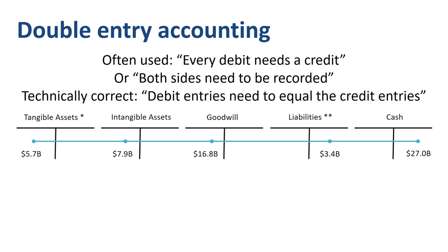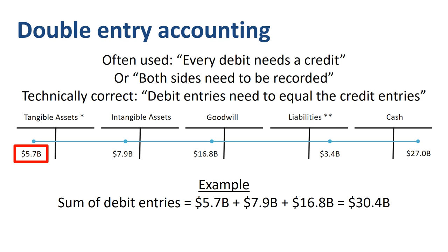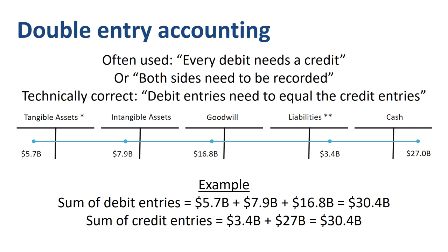Here's a summary example of a more complex journal entry recording the large acquisition of a company. There are three debits and two credits in this journal entry. Let's check whether the sum of the debit entries equals the sum of the credit entries. The sum of the amounts in the debit entries is $5.7 billion debit plus $7.9 billion debit plus $16.8 billion debit, which equals $30.4 billion debit.